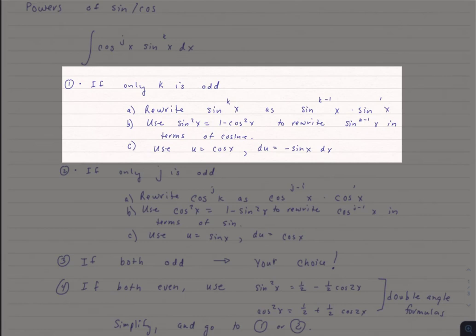Then we're going to go ahead and use the u substitution that u is cosine of x and du is negative sine x dx.